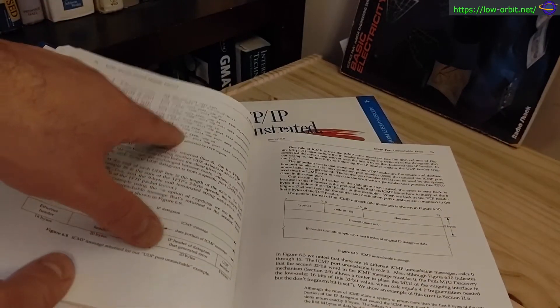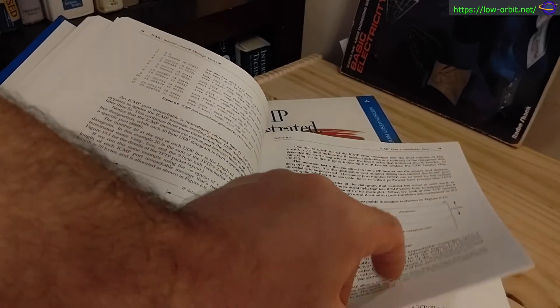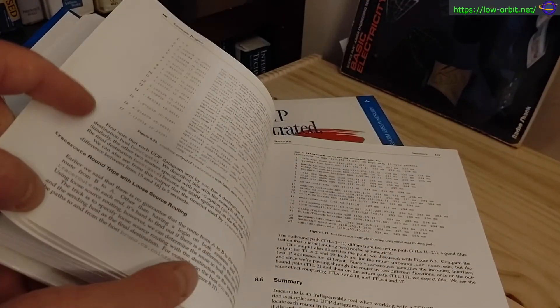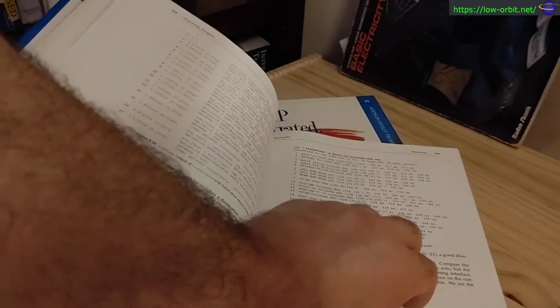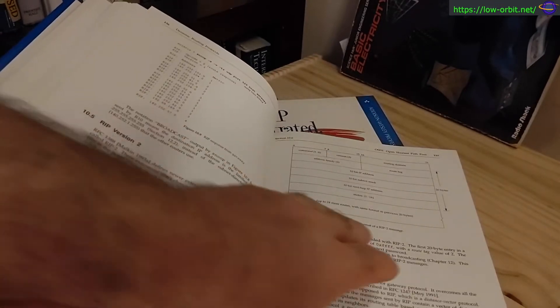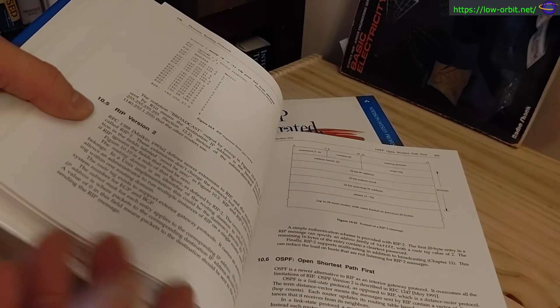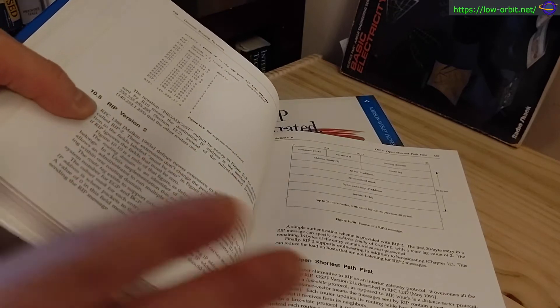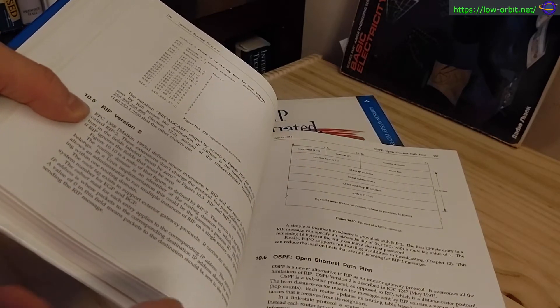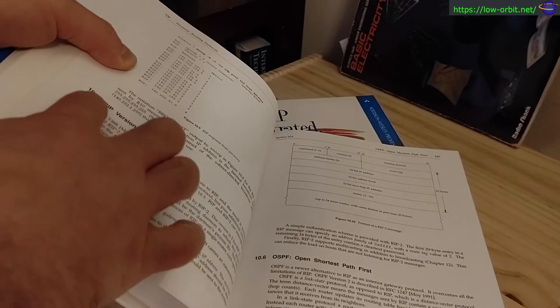You see here they give you packet dumps and little diagrams of packets showing how many bytes for each section of the packet. They do a good job of really explaining how it all works. If you want to know how network protocols work on the inside, this is the book to have. This is the definitive book to have—TCP/IP Illustrated comes in three volumes.